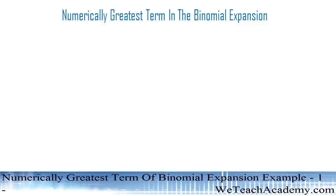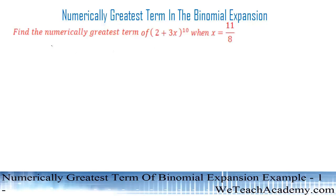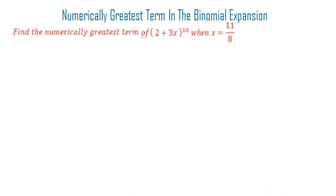Hello friends, welcome to Vtish Academy. Today in this presentation we are going to solve an example on numerically greatest term in the binomial expansion. Let us find the numerically greatest term of the binomial term (2 + 3x)^10 when x is equal to 11 divided by 8.